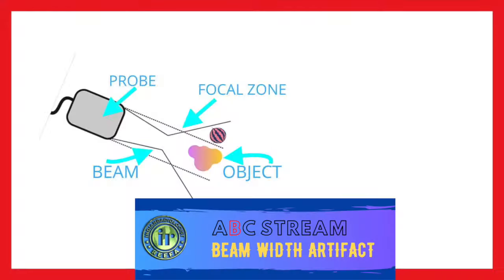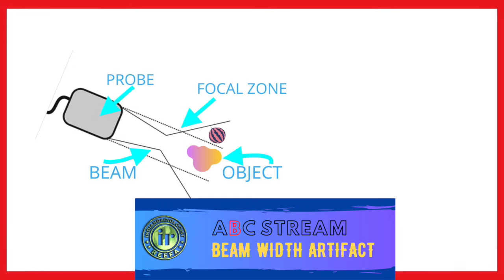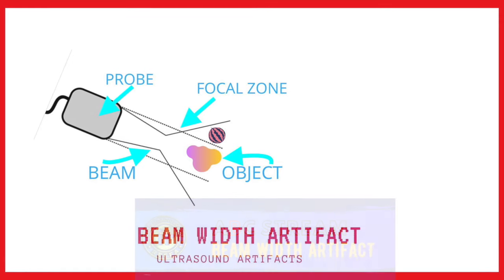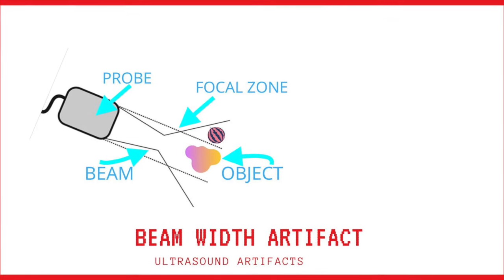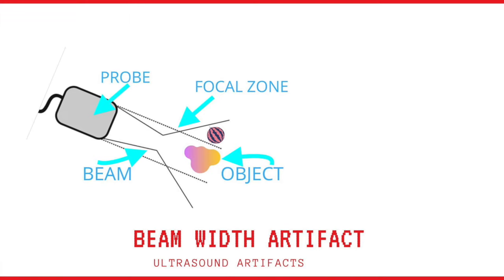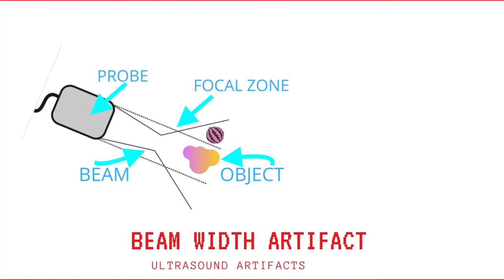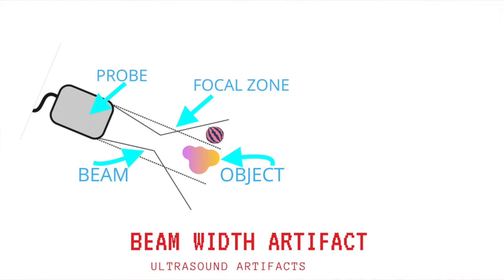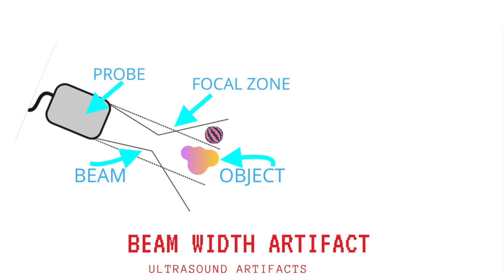The B in ABC STREAM is the beam width artifact, identified by understanding the shape of the ultrasound beam. Normally the main ultrasound beam exits the transducer at approximately the same width as the transducer, then narrows down as it approaches the focal zone, and then widens again distal to the focal zone.